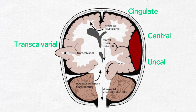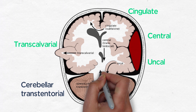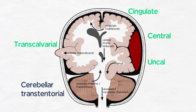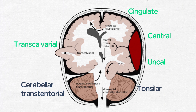Infratentorial herniation occurs when the cerebellum is pushed either downwards or upwards. Cerebellar transtentorial herniation is when the cerebellum is pushed upwards past the tentorium. Tonsillar herniation, also called transforaminal herniation, is when the cerebellar tonsils are pushed downward through the foramen magnum.